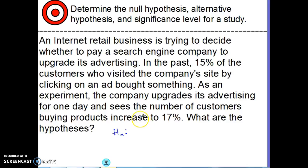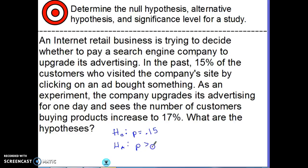If there's been no change, our null hypothesis would mean we predict the population parameter really is still 15% — that 17% is just part of the natural variation that would happen over a couple of days. The alternative hypothesis is that something actually did change. In this case we're hoping the number of people buying things really did get bigger, so we say P is greater than 0.15.